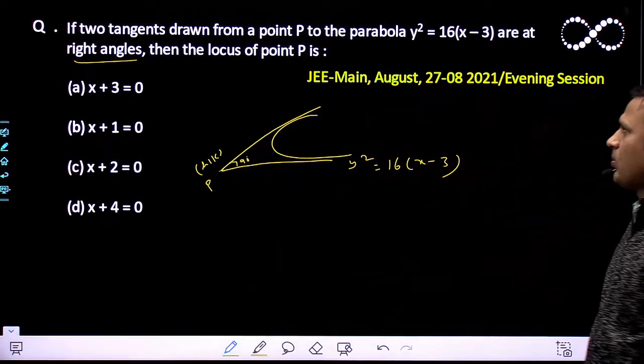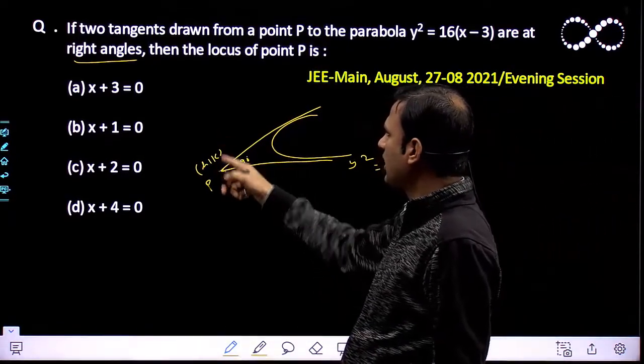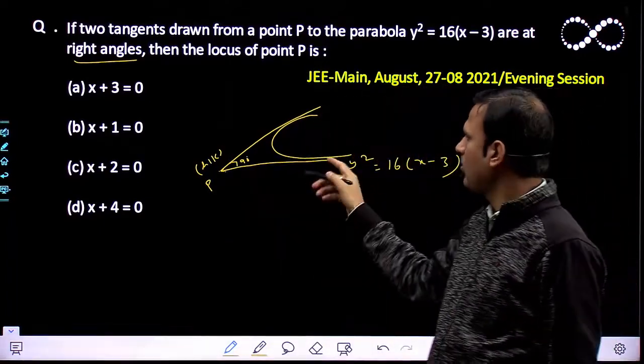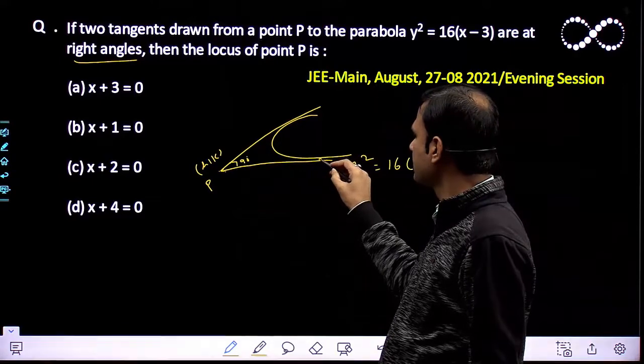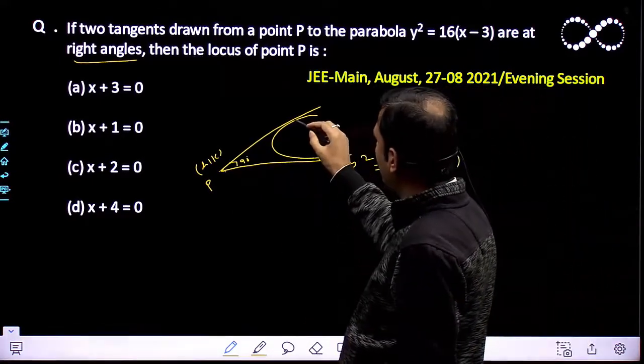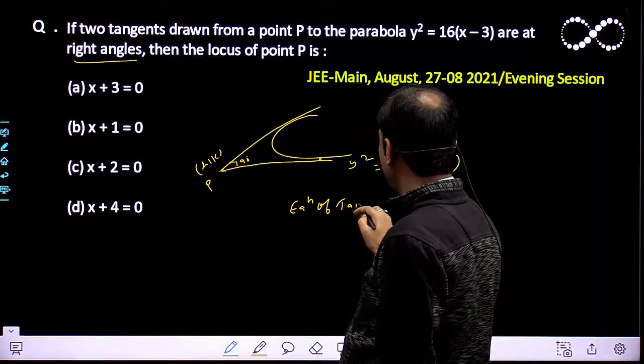Two tangents are drawn from the point. In the case of a parabola, we know that P's locus will be the directrix when the tangents are perpendicular. Otherwise, let's find it. Let's write the equation of tangent.